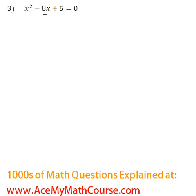Solve x squared minus 8x plus 5 equals 0 by completing the square. I'm going to get started by subtracting 5 from both sides of the equation. So we get x squared minus 8x equals negative 5.